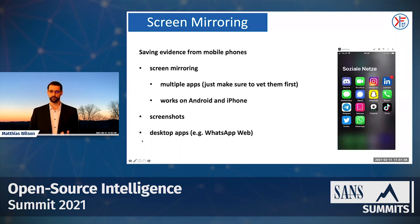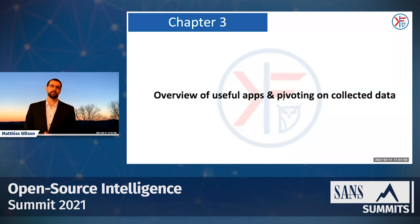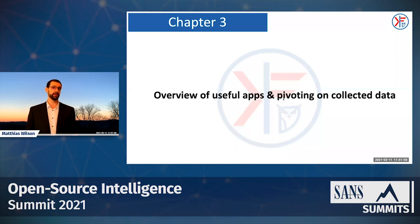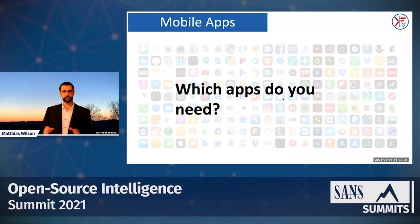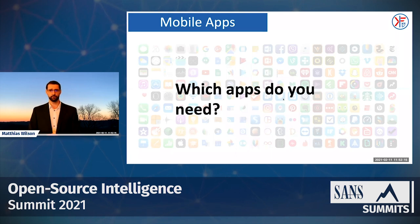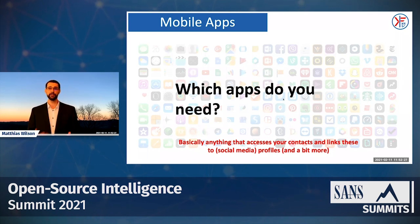What do we need? The basic methodology is putting a phone number in your contacts, allowing apps to access those contacts, and then seeing what information the app provides. There are tons of apps — millions of apps — so it's not easy to answer which ones you should use. A general answer would be: basically anything that accesses your contacts and links them to profiles or gives you any information back. Then there are several other apps that can also be useful.